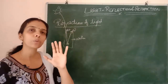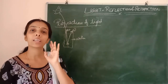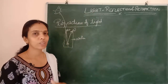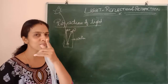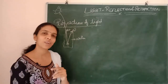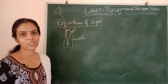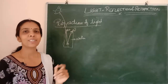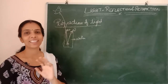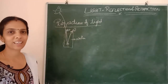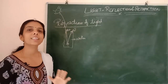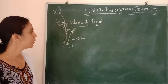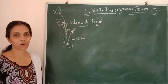We know that light travels in a straight path — rectilinear propagation of light. Whether light will bend or not is a different question — I will do a separate video on that. As far as I know, it won't bend in the absence of refraction; it moves in a straight line.